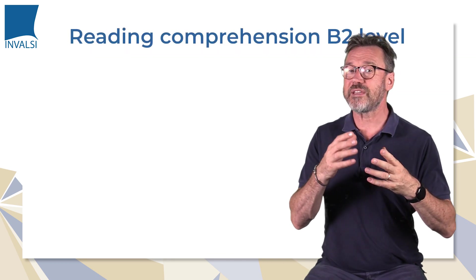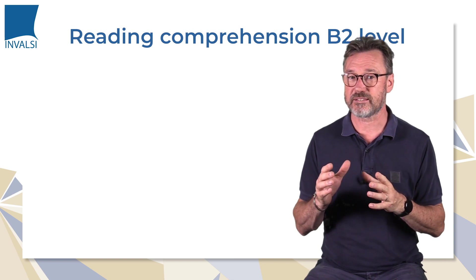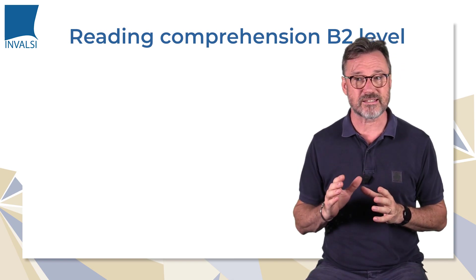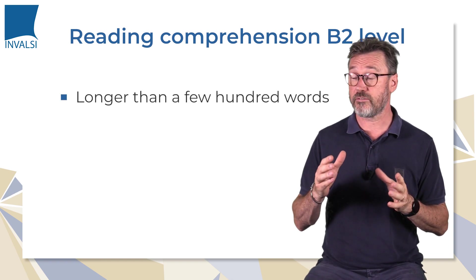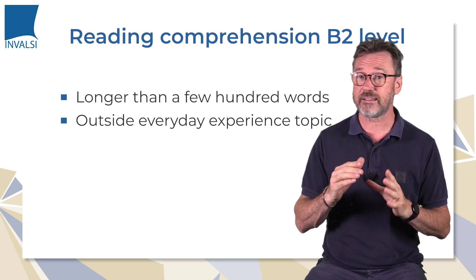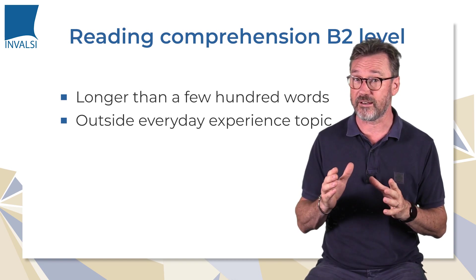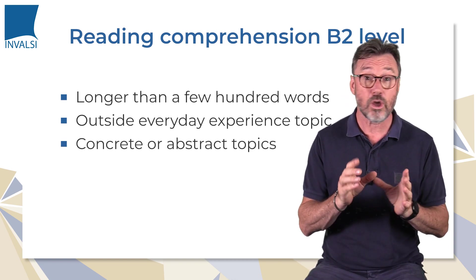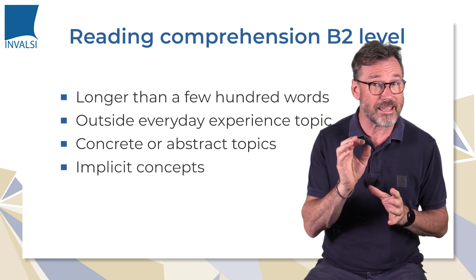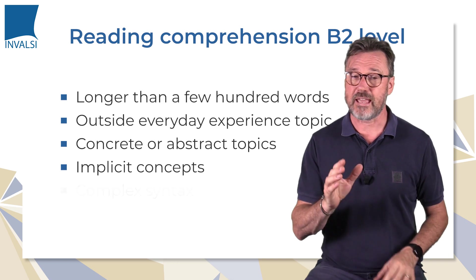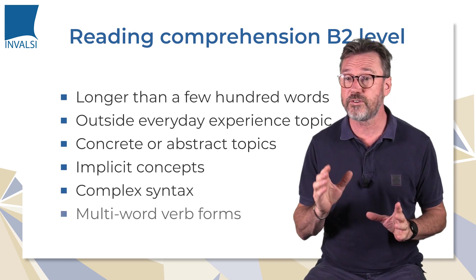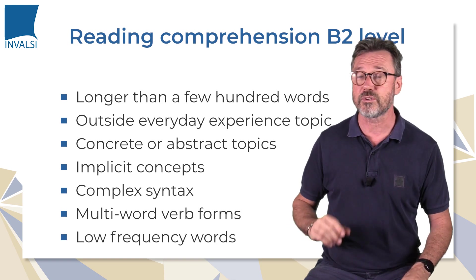So how do we select a B2 text? Students who have reached B2 can process a text which is longer than a few hundred words. The topic can be outside the everyday experience of the reader and can be concrete or abstract. Some concepts may be implicit. The text may include complex syntax, multi-word verb forms and low frequency words.